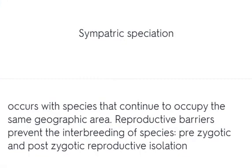Sympatric speciation occurs with species that continue to occupy the same geographic area. Reproductive barriers prevent the interbreeding of species, including prezygotic and postzygotic reproductive isolation.